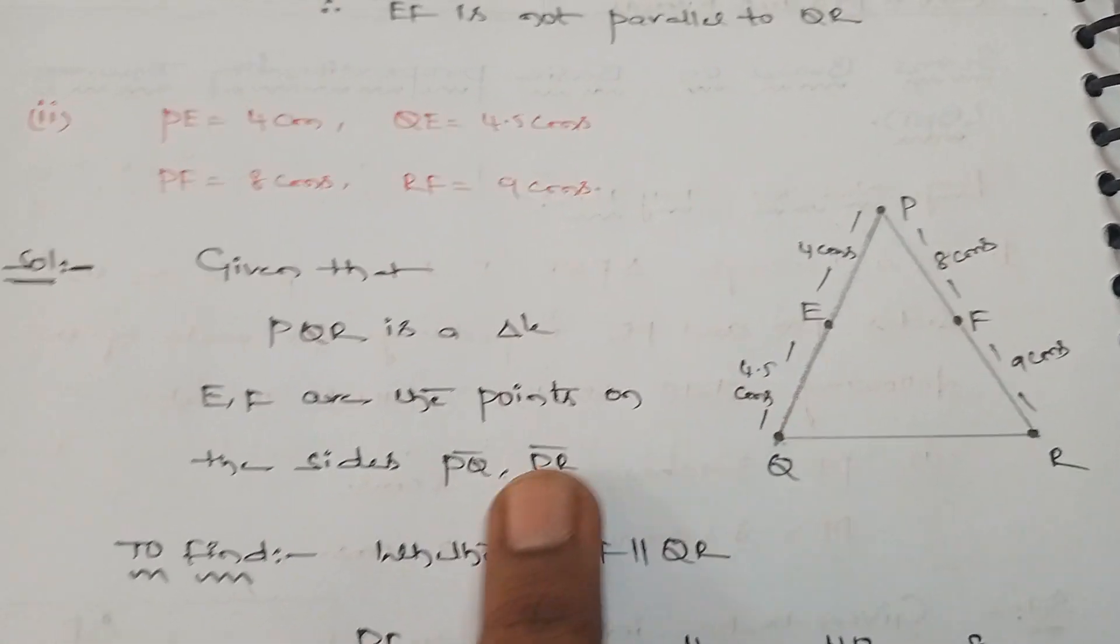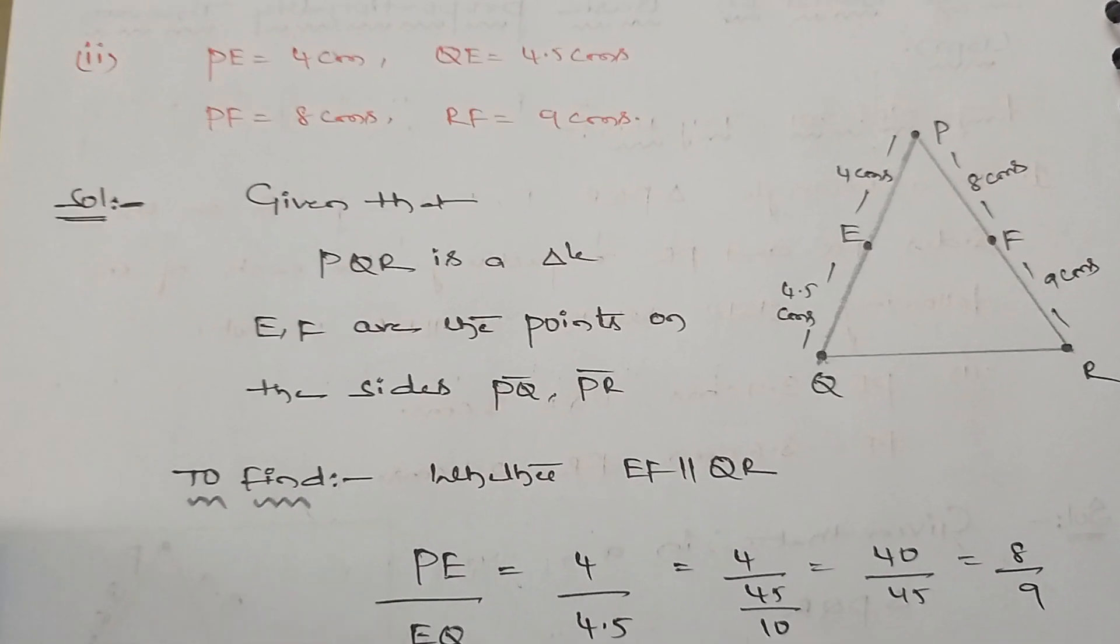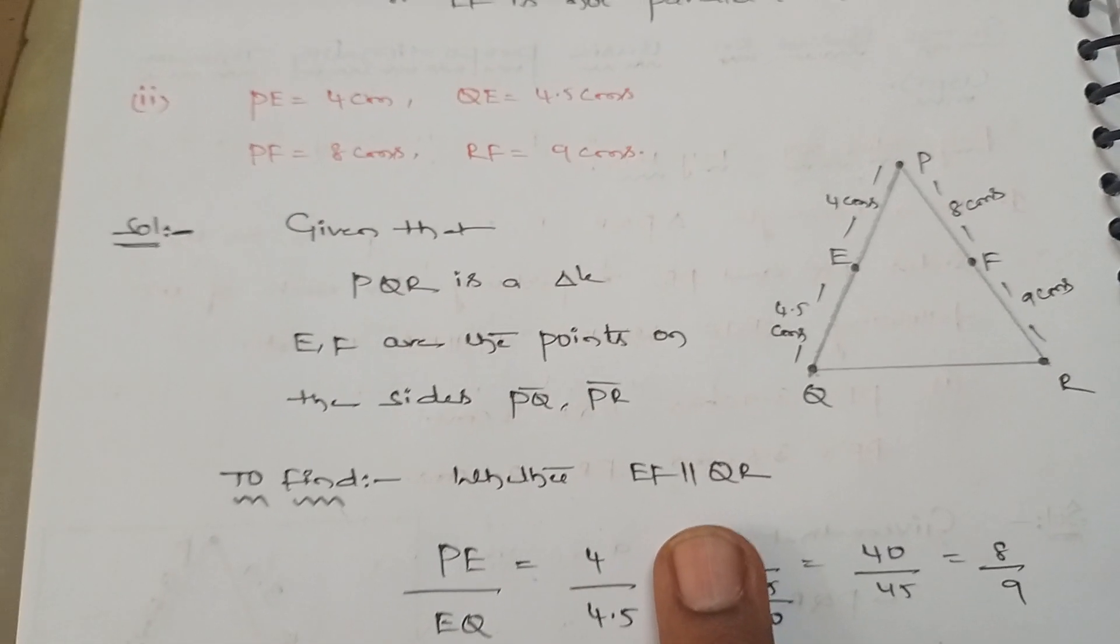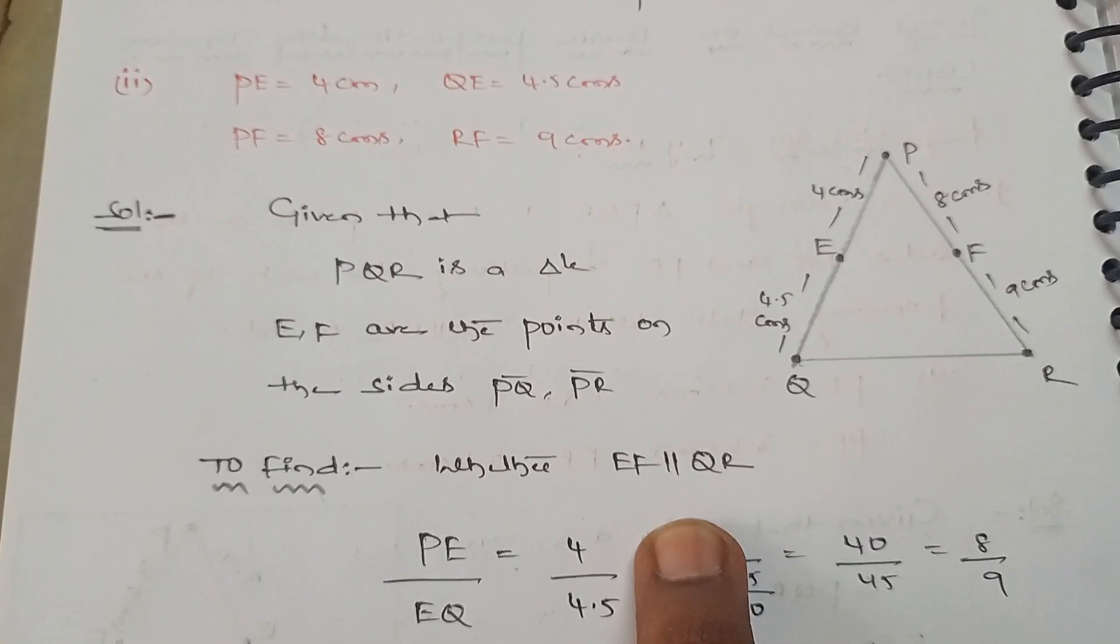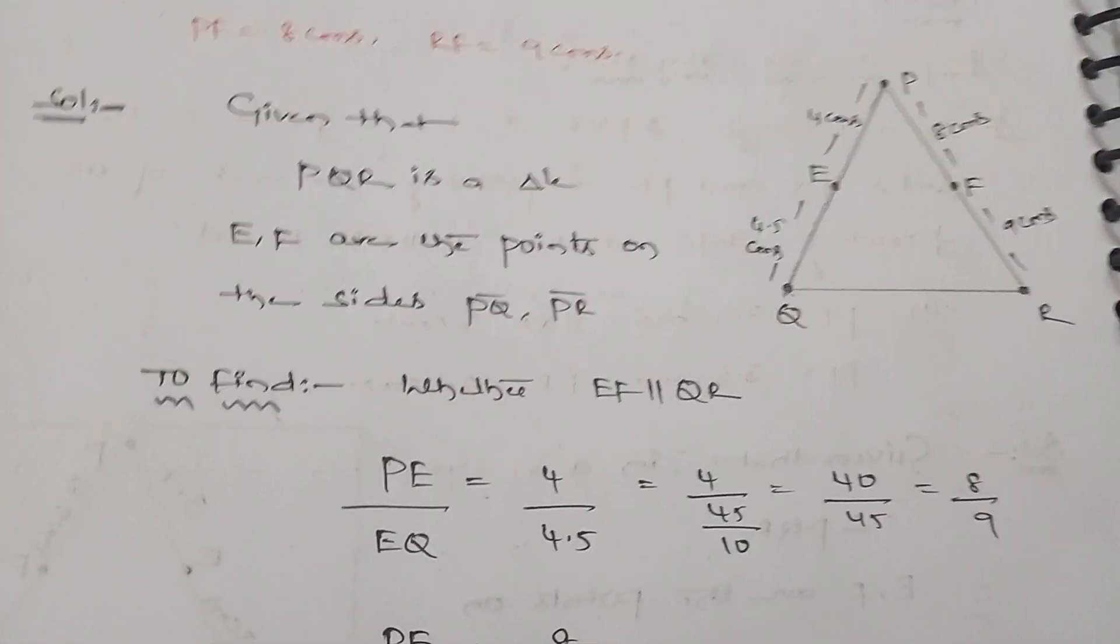This is based on the BPT case. Once a line is parallel to the third side, then the sides of the triangle are divided in the same ratio. It comes under BPT.